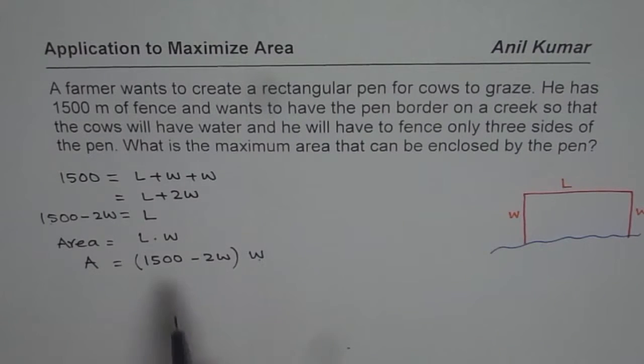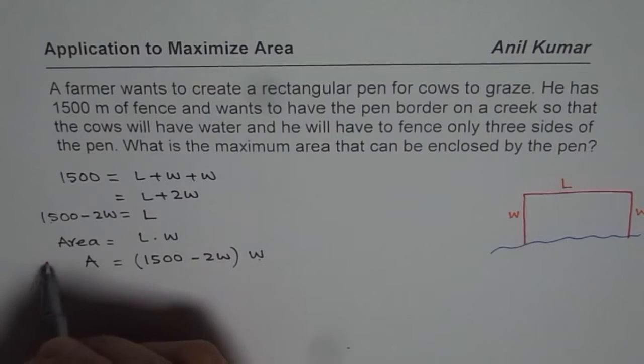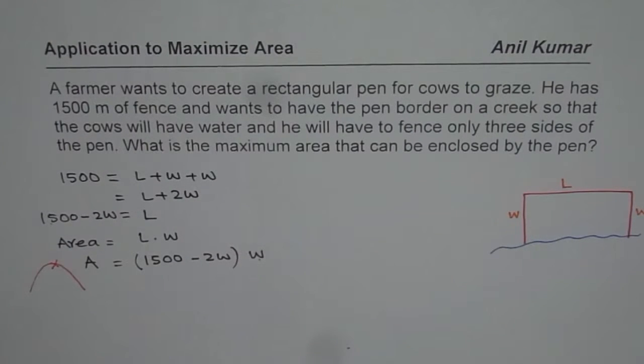As you can see here, that forms a parabola, where minus 2W means negative coefficient. So we will have a parabola which is kind of like this. Now, in this particular parabola, you can find two x-intercepts.